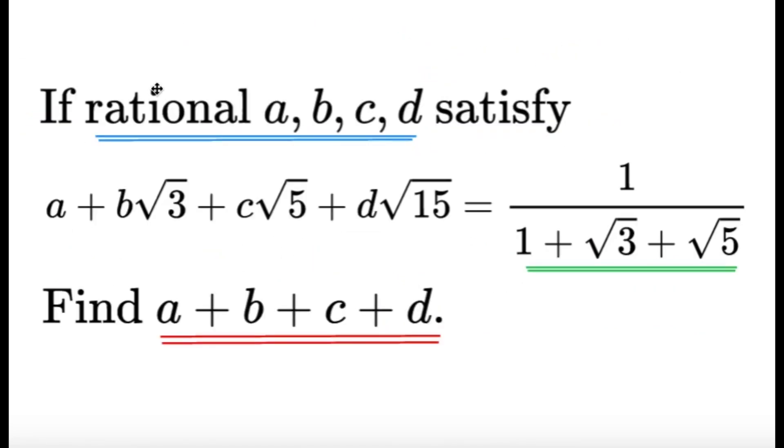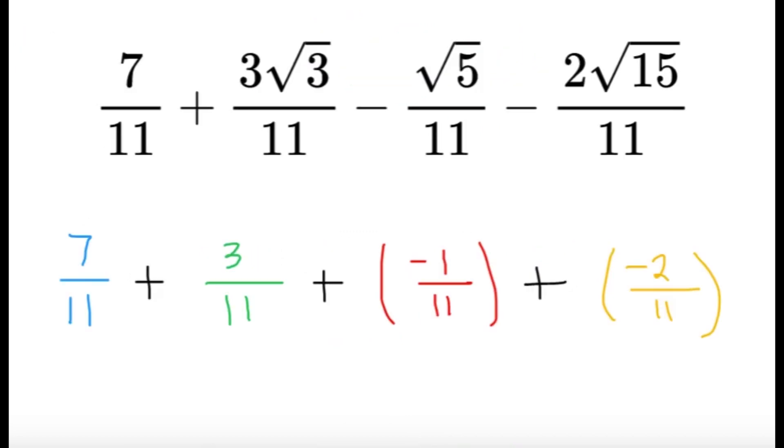Now if you go back to the given expression, or sorry, given the given, we have a plus b square root of 3 plus c square root of 5 plus d square root of 15, which is, as you can see here, we can easily say that, okay, this will be the a, and then 3 over 11 here should be the b. Technically, here we have negative 1 over 11 for a value of c. And lastly, we have technically negative 2 over 11 over here as the value of d.